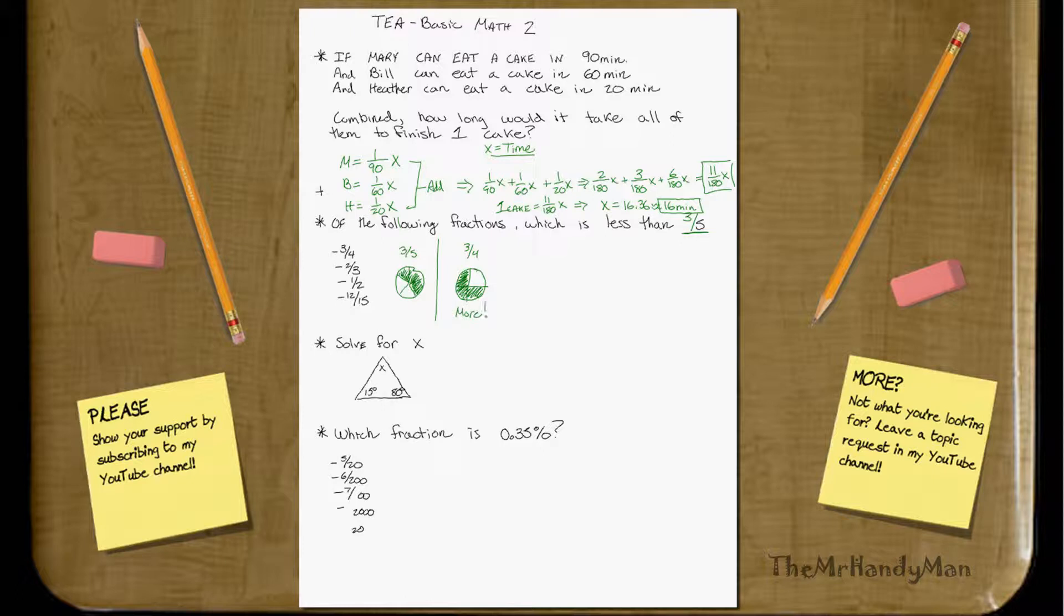What about 2 thirds? 2 thirds will look something like this, which will look like that. But once again, that is more. What about 1 half? That one looks like less. Let's check. Let's finish up. You've got to follow through.